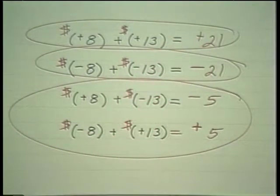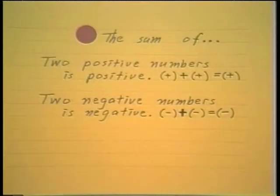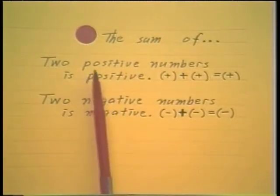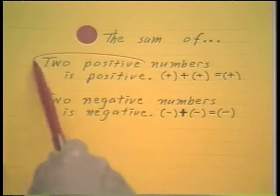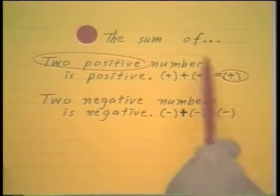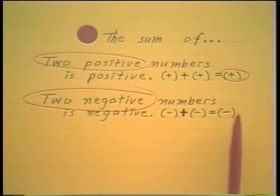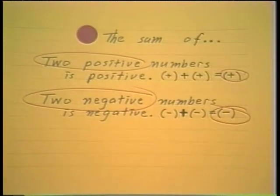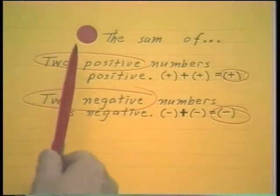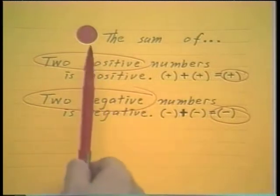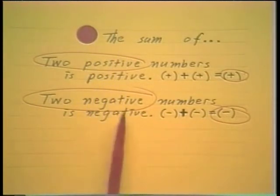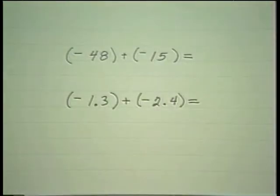These are indeed the correct answers. The first part of our rule simply states that if you're adding two positive numbers, the answer is always positive. And if you're adding two negative numbers, the answer is always negative. So at this stage, before you get into algebra where some courses will prove this, we simply memorize it. When adding two negatives, the answer is negative.